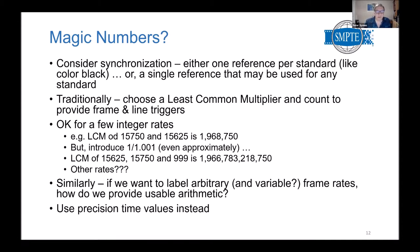One traditional approach was to choose the least common multiple and then count down to all the frequencies actually needed. That's okay as long as you have a relatively small number of integer rates, but it gets really complicated when you start dividing by 1.001. You end up with essentially unusable numbers if you try to have direct counts for all standards you might want to use. That's even more true if you want to label arbitrary frame rates and possibly variable frame rates.